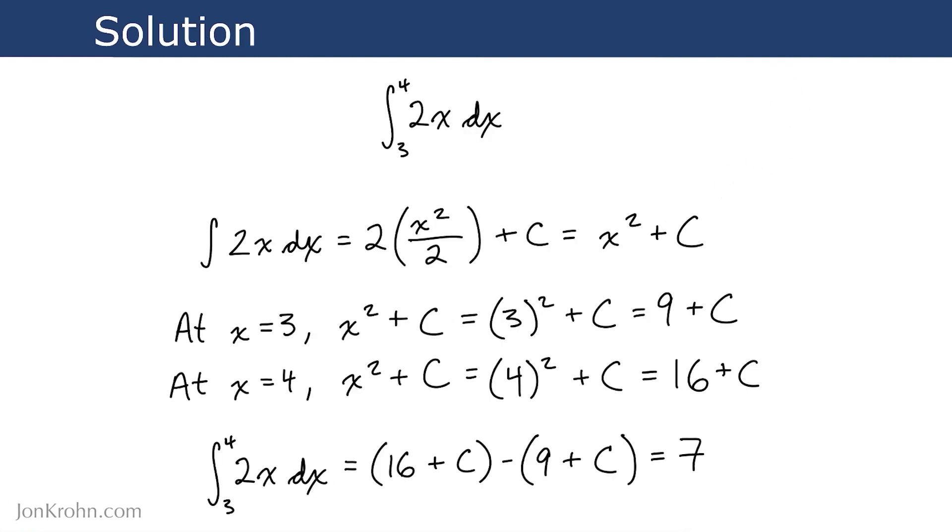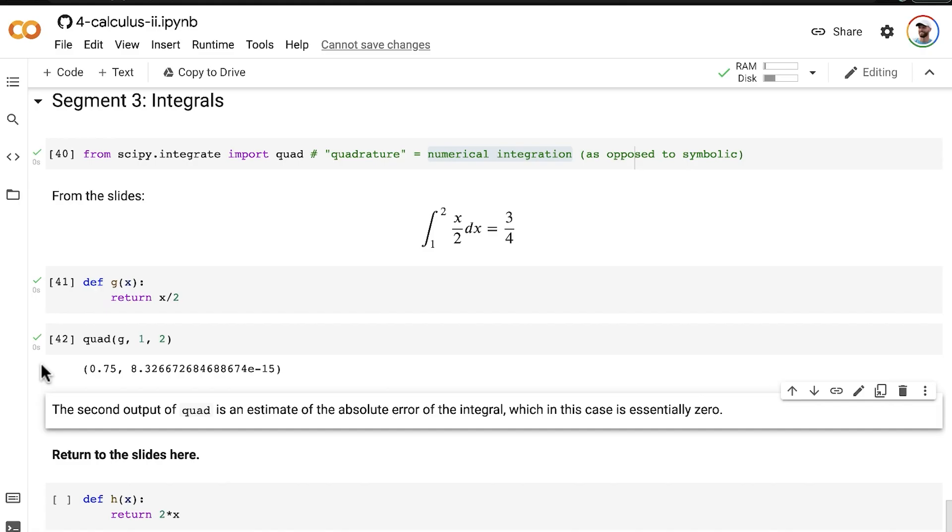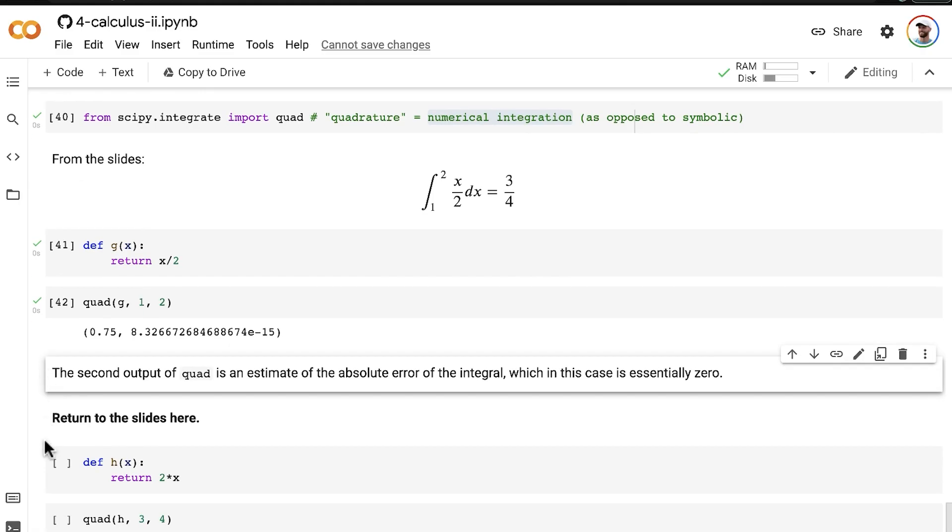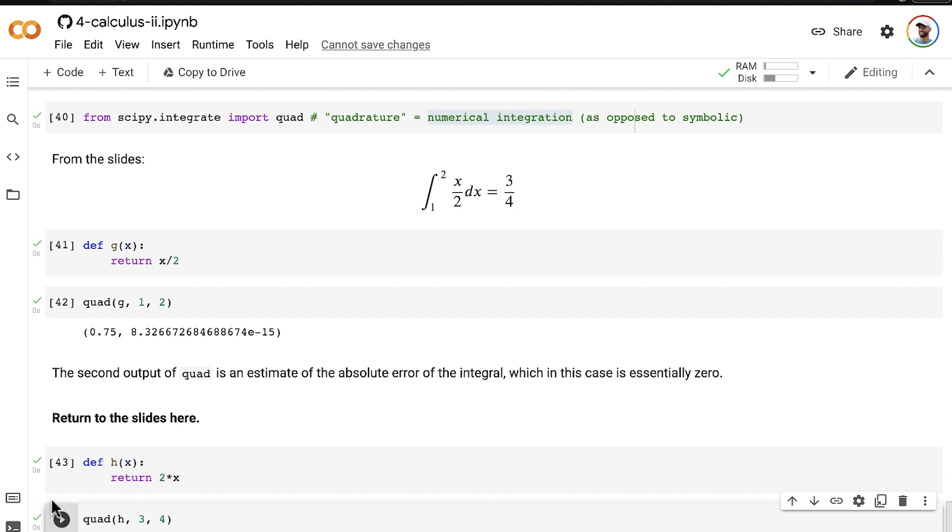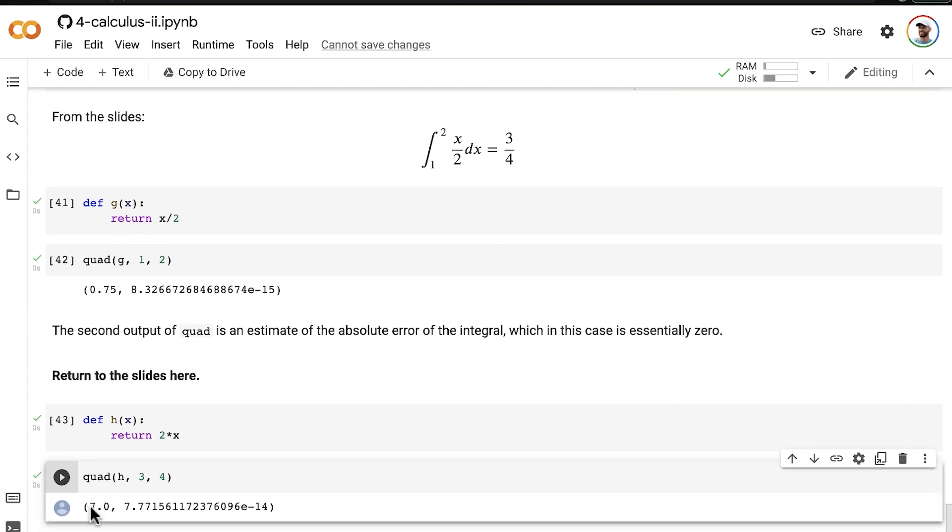Alright, so the solution to the definite integral here is 7. And then to get that same answer in code, you can use these two lines of code and boom, it's 7.